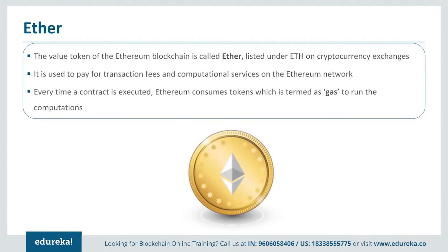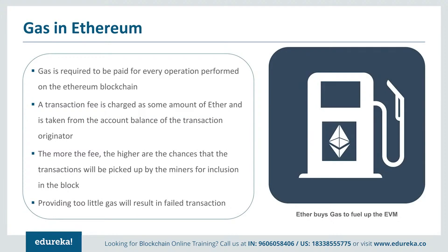Gas is something you pay for — the transaction fees charged are essentially for purchasing gas. Any computation you want to perform requires buying gas, which is deducted in the form of Ether. If you provide a high transaction fee, the chance of your operation completing faster is higher, because miners take this as profit. If you provide too little gas, the transaction itself may fail. It is completely up to you to decide on the gas used for your computational process.